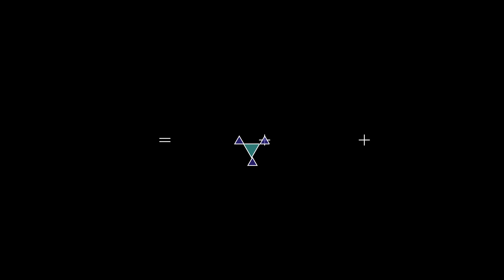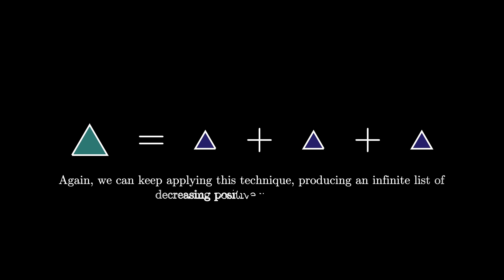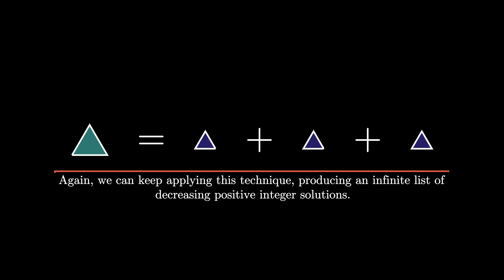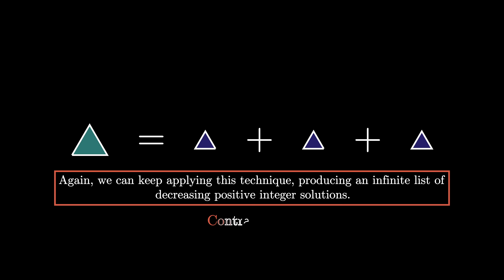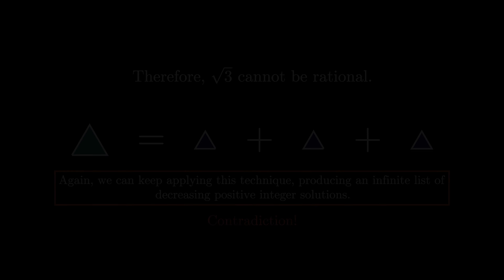Once again, this repetition allows us to produce an infinite collection of decreasing positive integer solutions to x squared equals 3y squared. This is a contradiction, as no such decreasing positive integer list exists. Therefore, the square root of 3 cannot be rational and must be irrational.